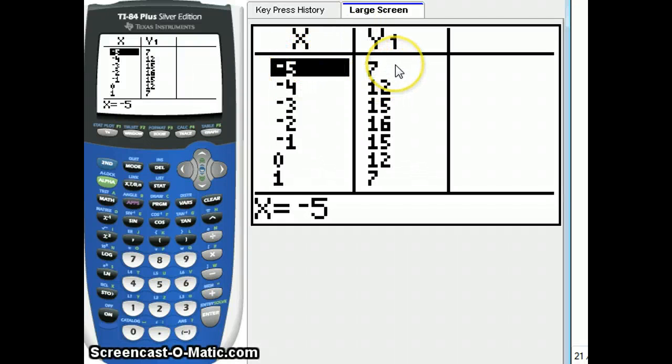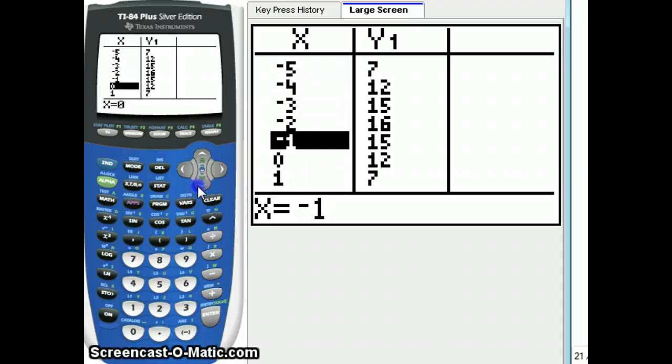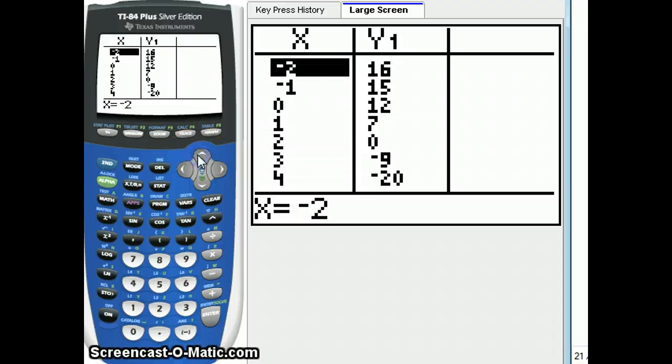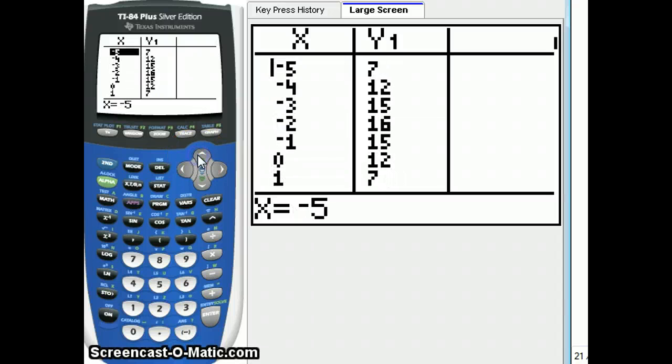7, 12, 15, 16, 15. Let me go ahead and put those into my... If you push the down arrow, you can see the rest of them. 7, 12, 15, 16, 15, 12, 7. Anyway, I'm going to write those down.